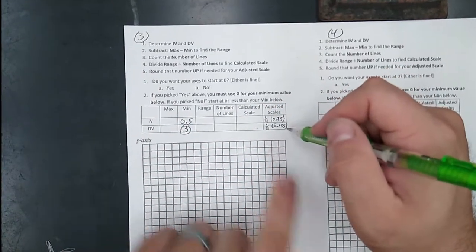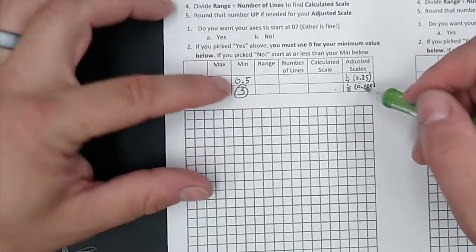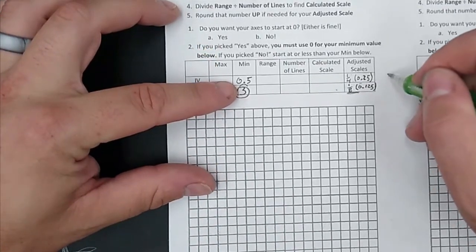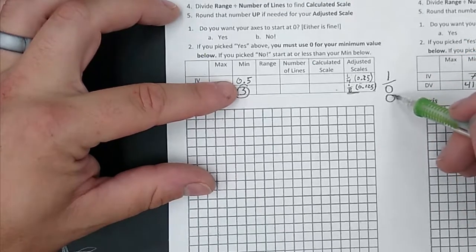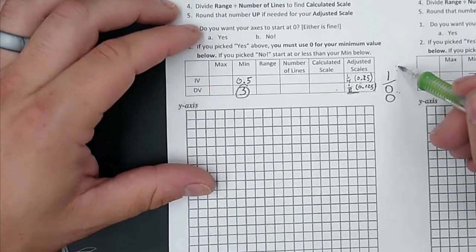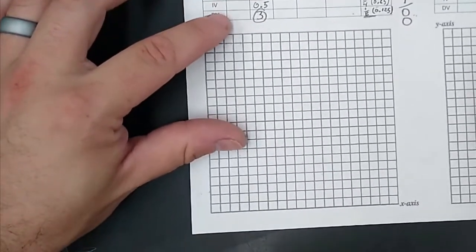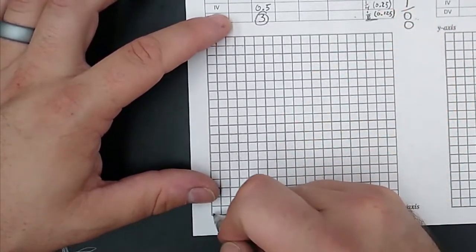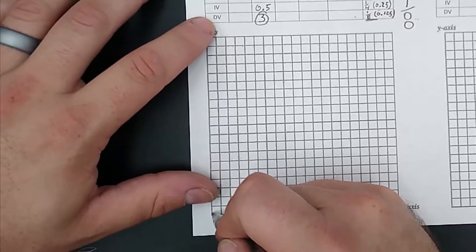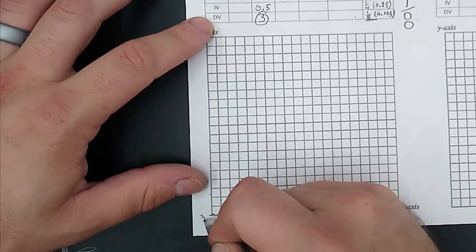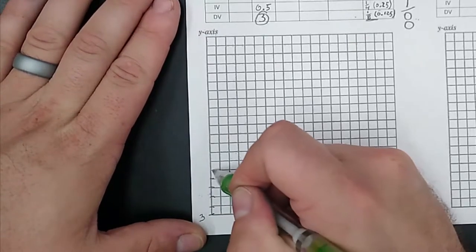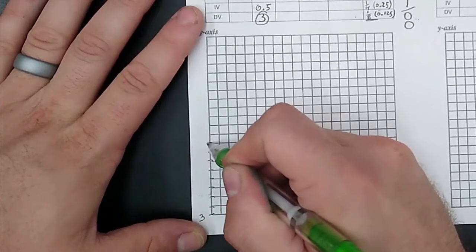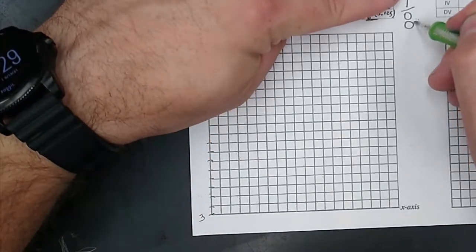This one's a little different, so I'll show you a little hint for number three. Let's say we're starting at three and we're going by 1 eighth. So think about that fraction, 1 over 8. All that means is for every 8 lines, you're just going up by 1. Here, let me show you. Start at a minimum of 3 on our y-axis. So right there, 3. We go up 8 lines. 1, 2, 3, 4, 5, 6, 7, 8. 8 lines is just 1.